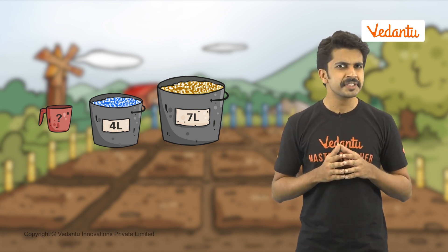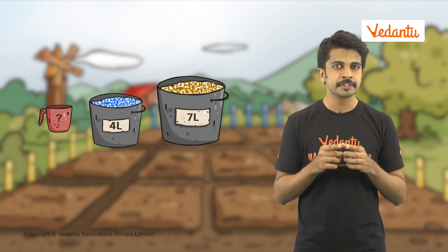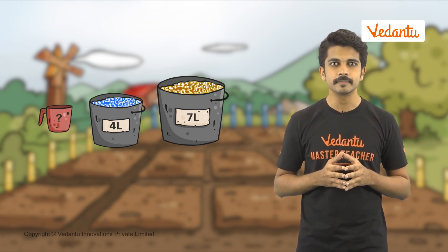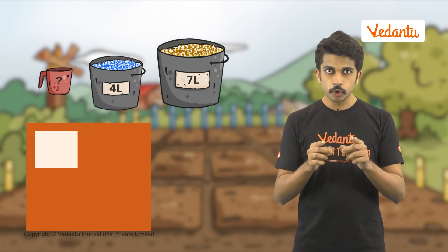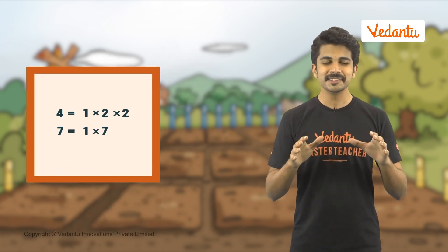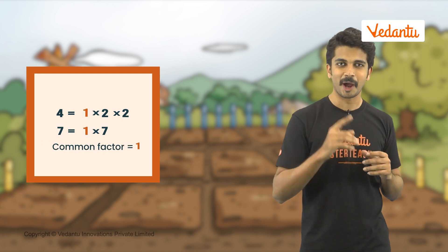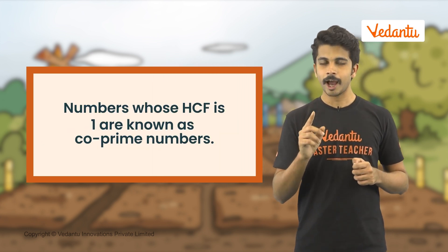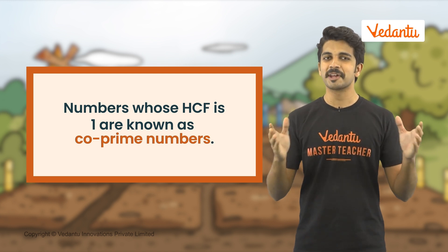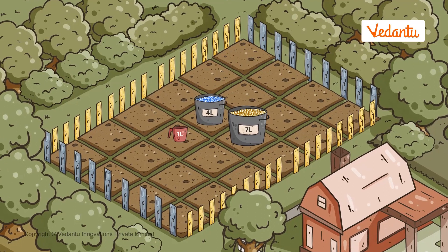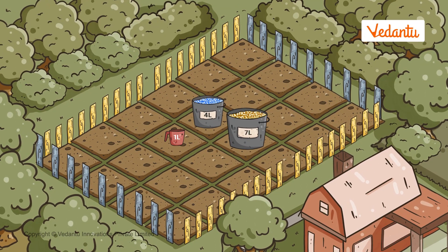What is the biggest container I can use to measure the glitter from each can without leaving any leftover glitter? First, we list the prime factors of the given numbers. These numbers have no common factors except one. Such numbers, whose HCF is 1, are known as co-prime numbers. So we can use a 1-liter container to measure out quantities from the 4 and 7-liter cans of glitter.